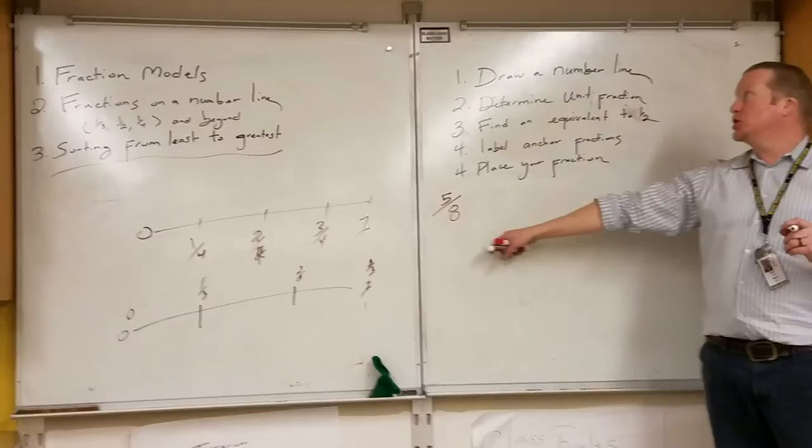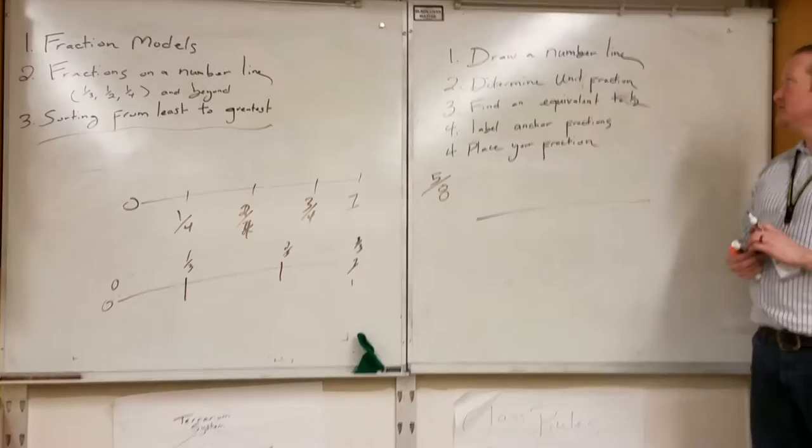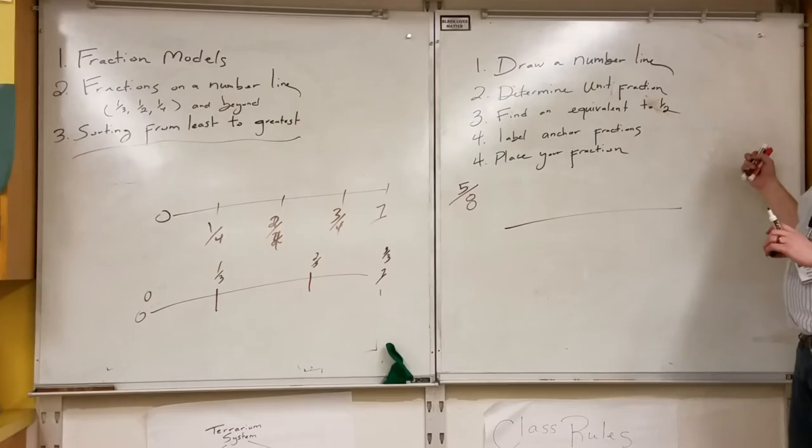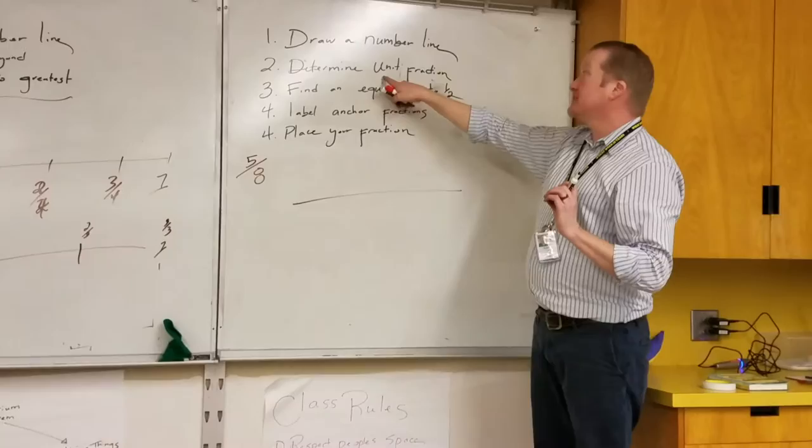Well, here's our strategy. First, we're going to draw a number line. Ryoko, read number two for us, please. Determine unit fractions. Determine what unit fraction we're working on. So, in this case, what fraction are we working with, Ryoko? Five eighths. Eighths, which means that we have taken our whole and divided into eighths. That is our unit, eighths in this case.